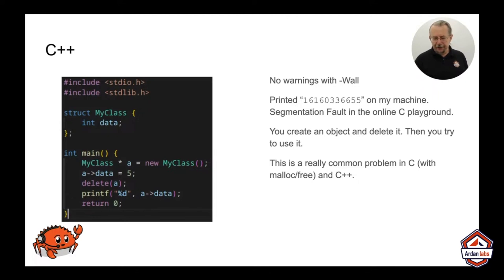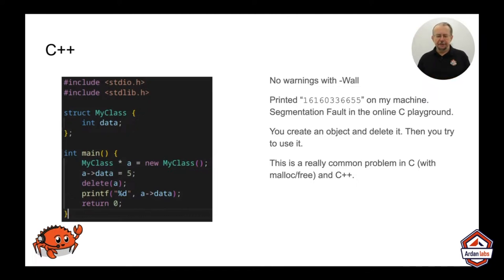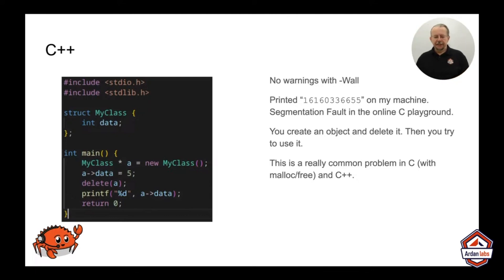Well, here's the thing — this doesn't crash on my Linux machine. It prints out a big number starting with 161033. I have no idea what that was. In the online C playground, it segfaulted and died. So you've created an object, you've deleted it, and then you've tried to use it. Believe it or not, this is a very common problem.